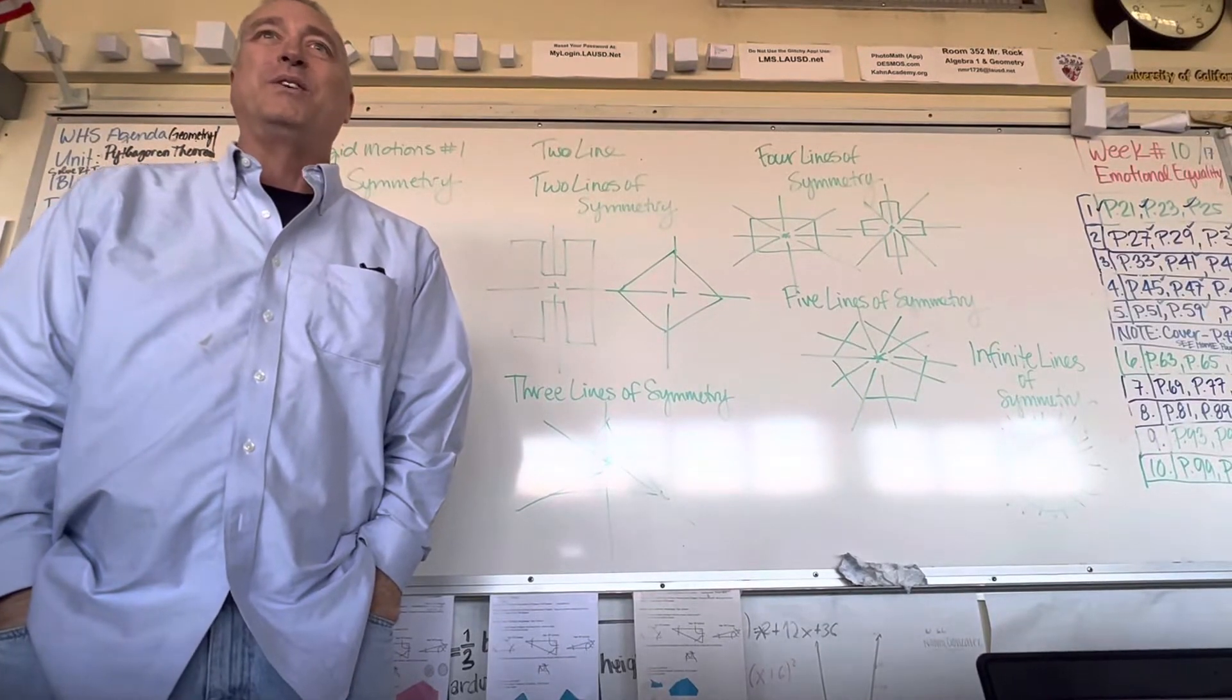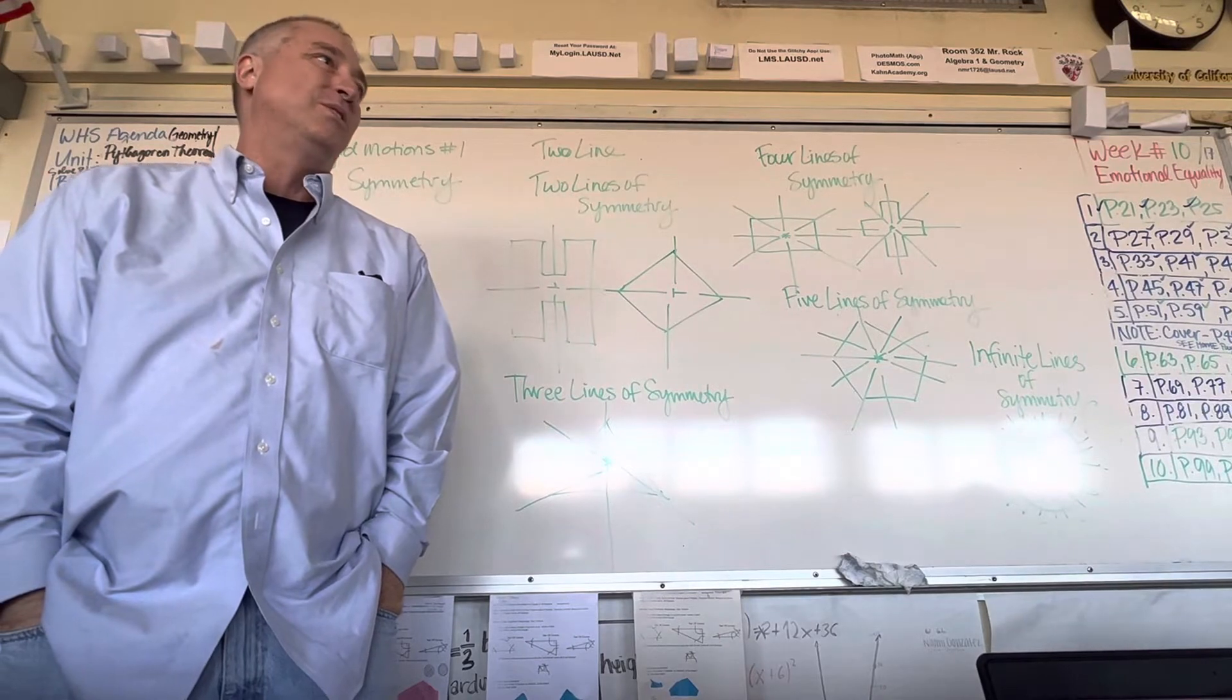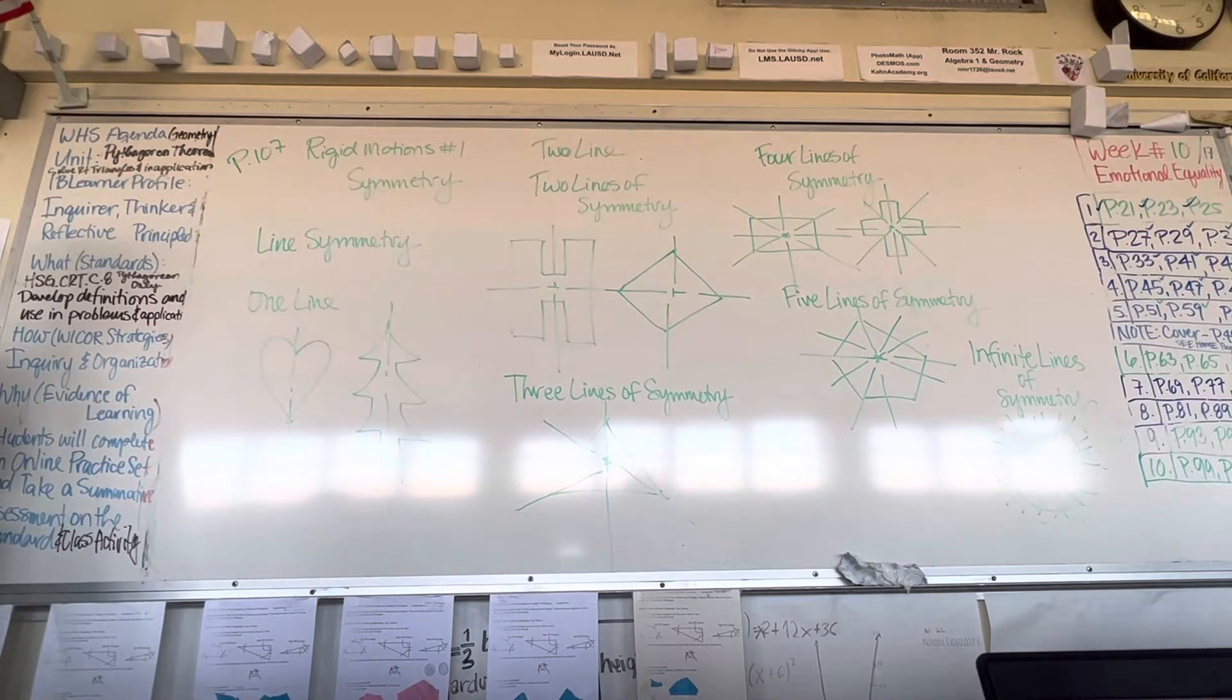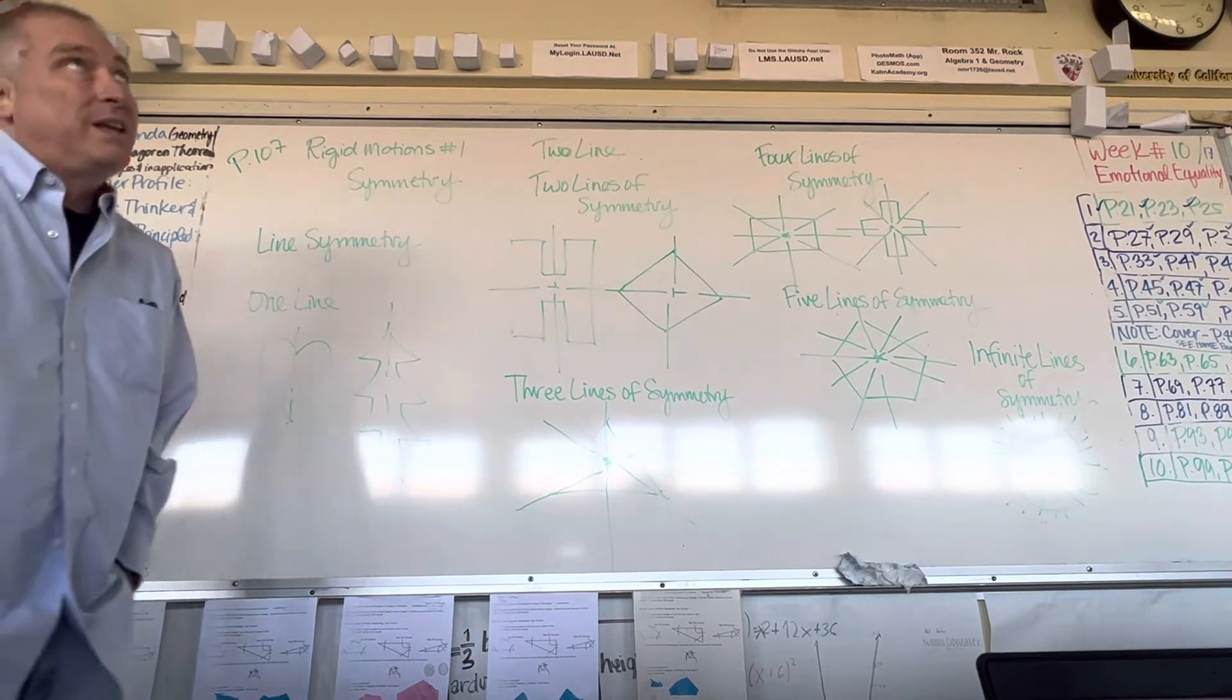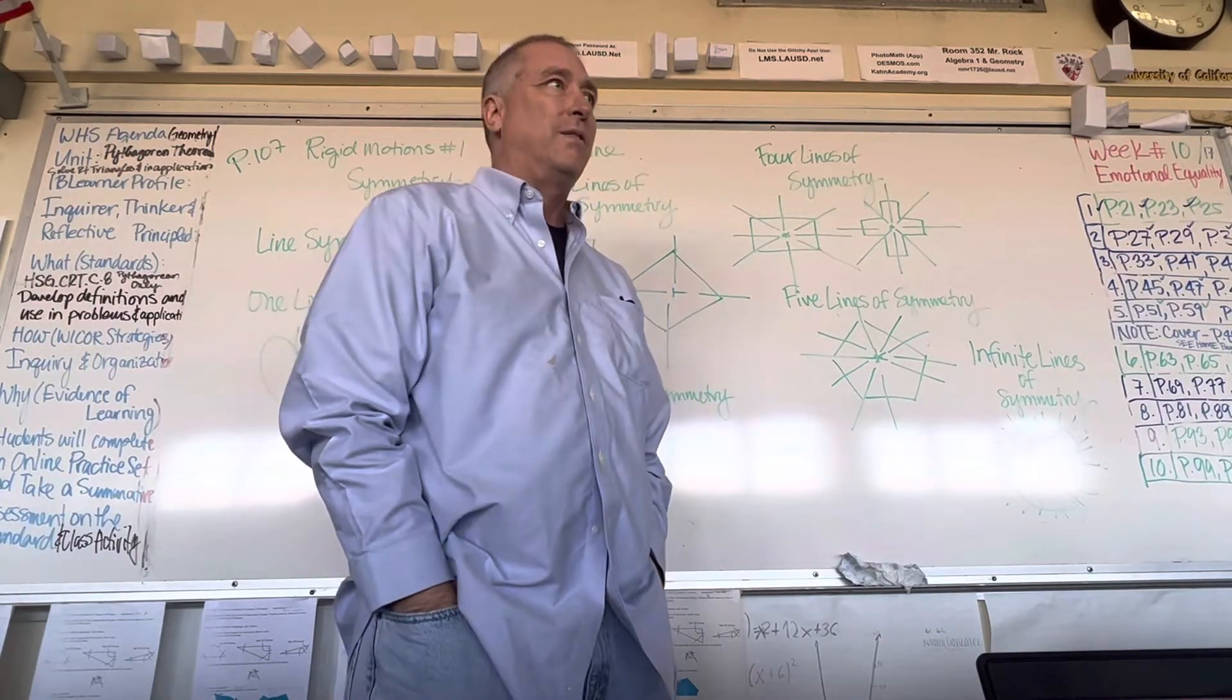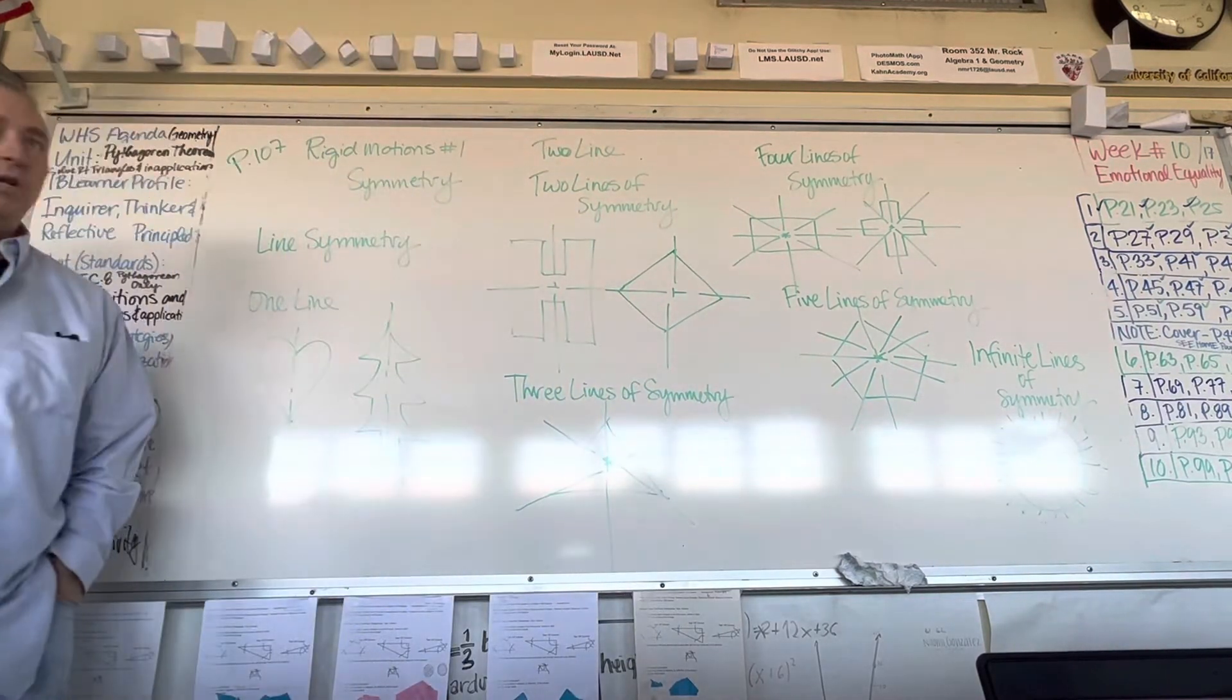Okay, are you guys ready? Can I redirect you? If you're intensely doing notes, continue to do so, but if you're not, will you look up here and consider page 107? It's rigid motions number one, and it's called symmetry. It's a very easy lesson, I think. I guess I shouldn't say that until you agree, but it goes back to a subject you may or may not have covered in prior years of math, but the idea of symmetry. What is symmetry?